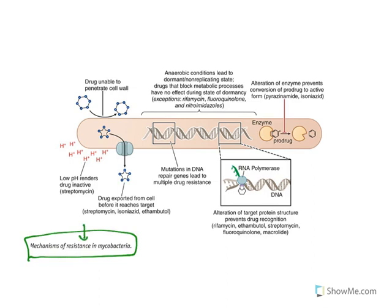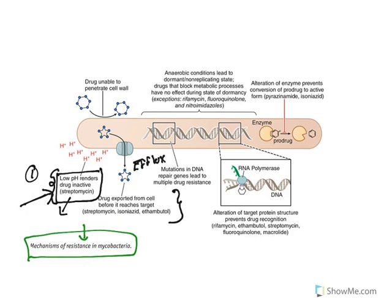The major problem with Mycobacterium tuberculosis is that it develops resistance through multiple mechanisms. The organism can create an acidic environment where low pH inactivates streptomycin. It also uses an efflux pump to export drugs like streptomycin, isoniazid, and ethambutol out of the cell before they reach their target.